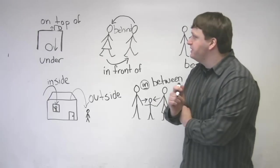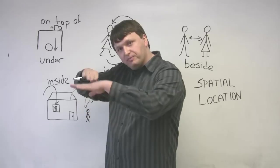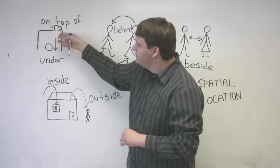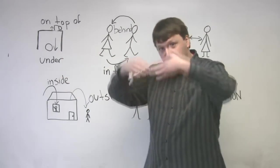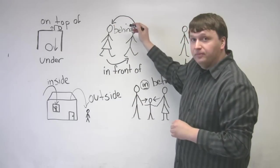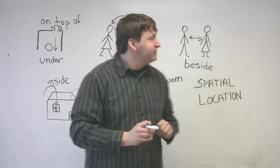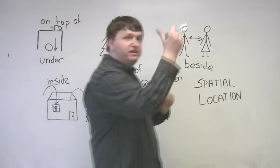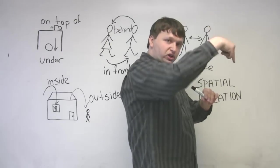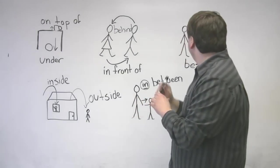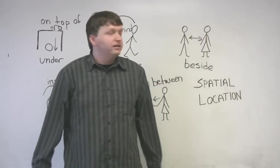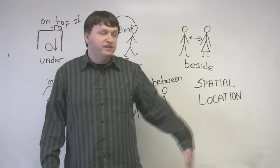So let's just go over them one more time. The mug is on top of the table. It is on a surface. The ball is under the table. It's covered by something. The girl, let's do that representation again. The girl is behind the boy. The boy is in front of the girl. Over here, we have two people that are standing beside each other. Beside.